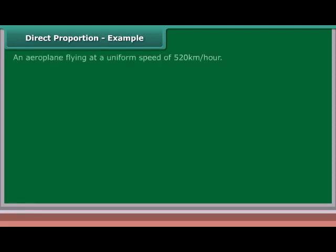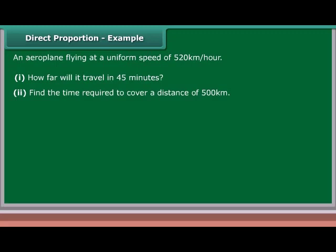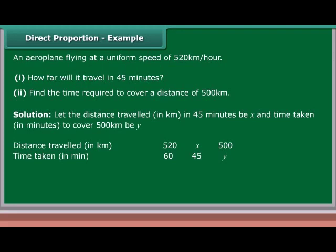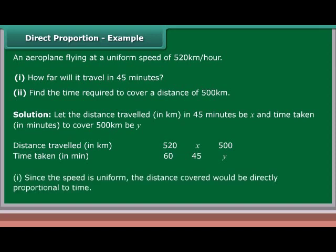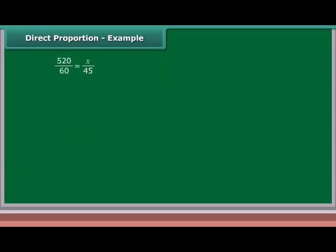Example: An airplane flying at a uniform speed of 520 kilometers per hour — how far will it travel in 45 minutes? Also find the time required to cover a distance of 500 kilometers. Solution: Let the distance traveled in 45 minutes be X, and the time taken in minutes to cover 500 kilometers be Y. Since the speed is uniform, distance covered is directly proportional to time. So 520/60 = X/45.